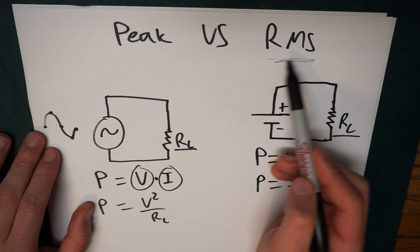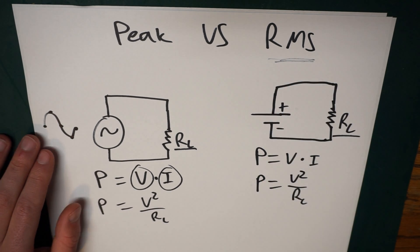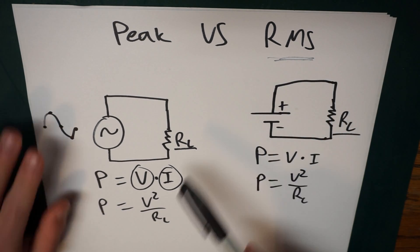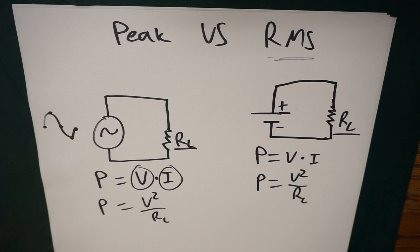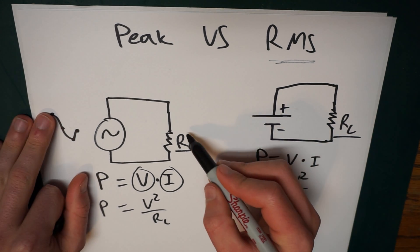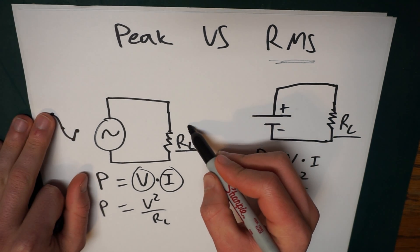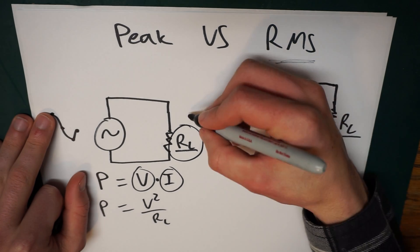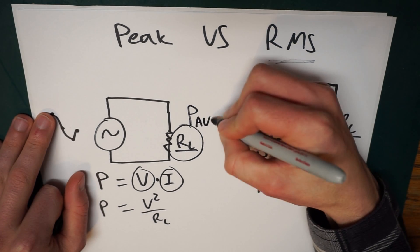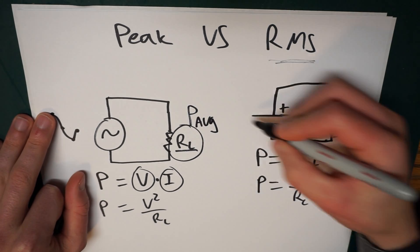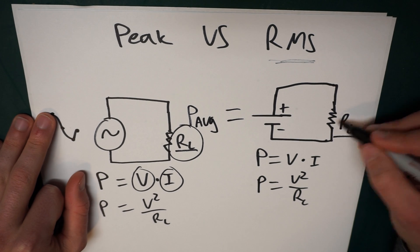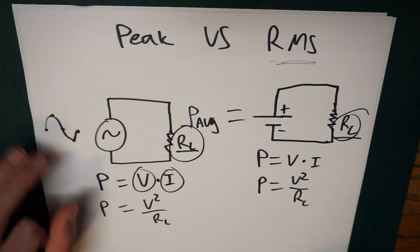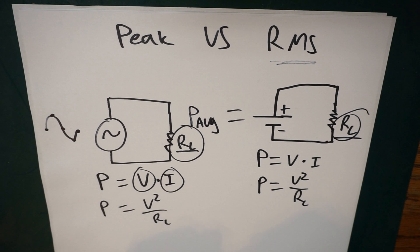And RMS kind of tries to tame that problem. RMS really gives us this answer — it allows me to actually place an average power flow in this AC circuit. It allows me to say the average power is equal to the actual power that this same load would draw in the DC circuit.